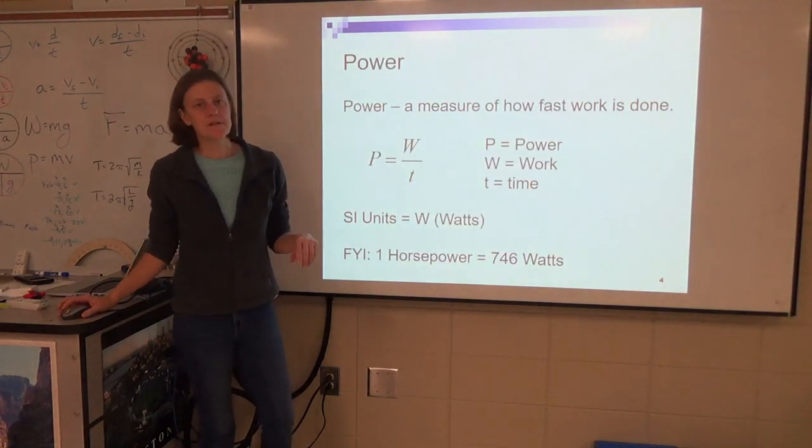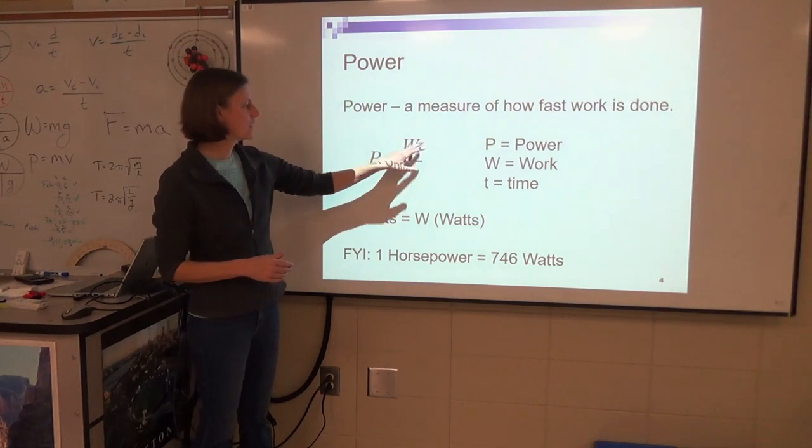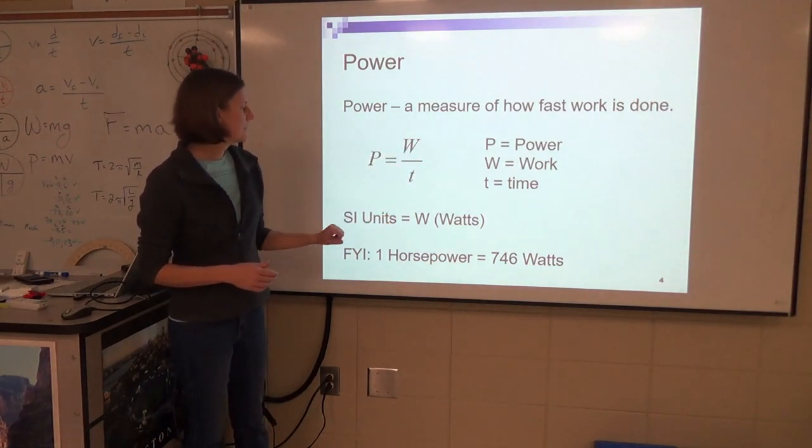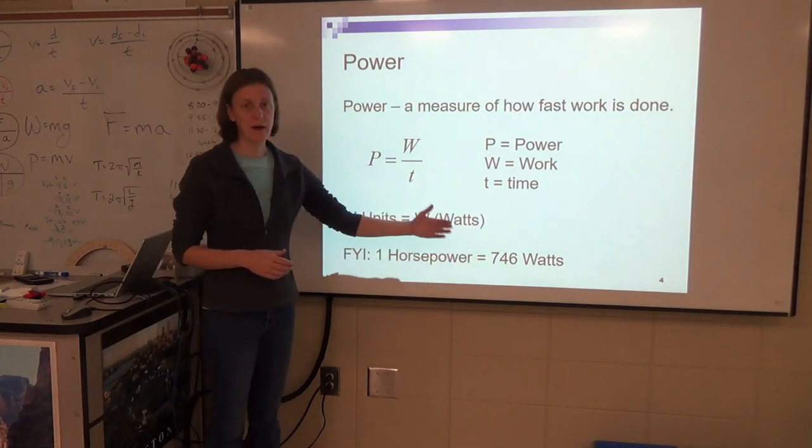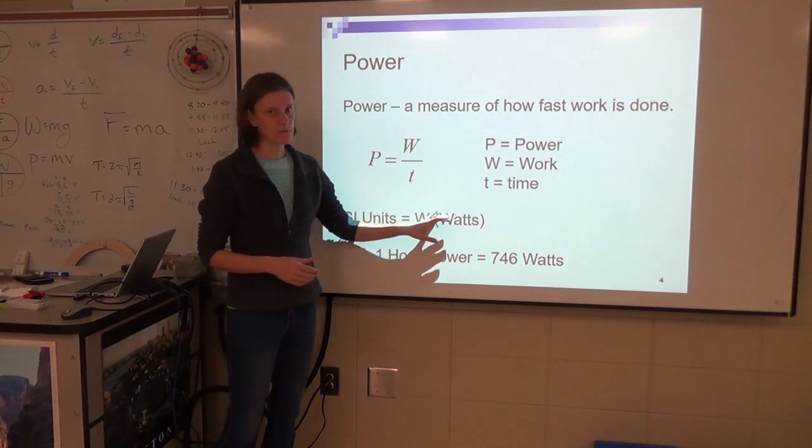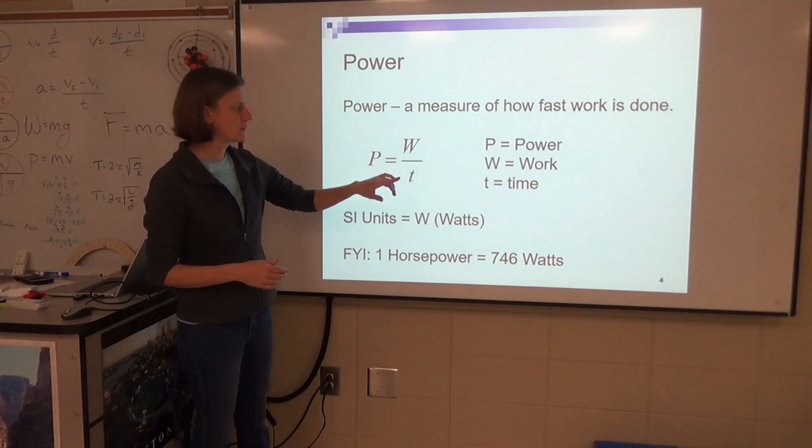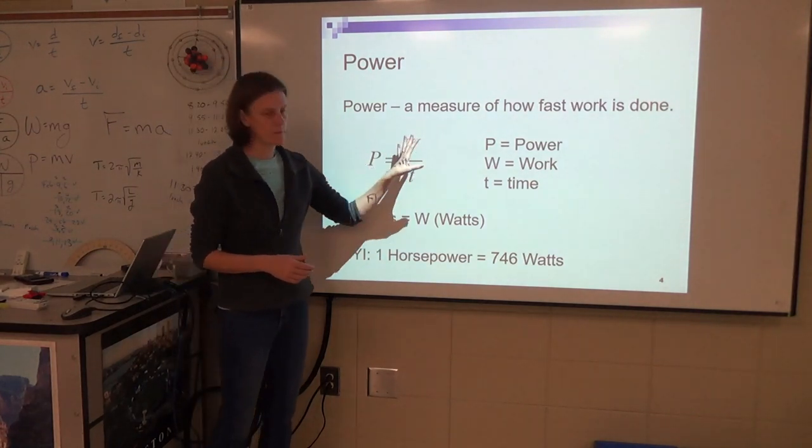Power is a measure of how quickly you do work. We've got work over time—not weight over time, but work over time. Your units here are watts. You may have heard that before, but now another W. The unit is W for watts. This W is W for work, not to be confused with W for weight.